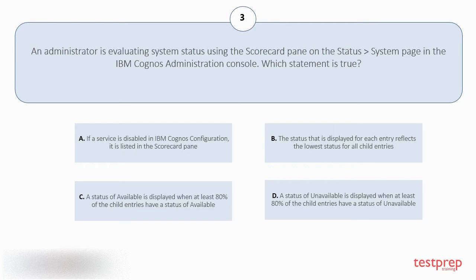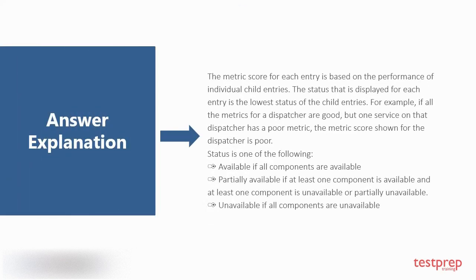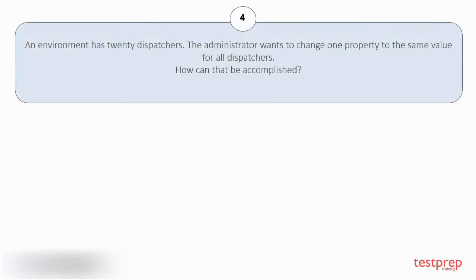D. A status of Unavailable is displayed when at least 80% of the child entries have a status of Unavailable. The correct answer is option B. Question number 4: an environment has 20 dispatchers. The administrator wants to change one property to the same value for all dispatchers. How can that be accomplished?